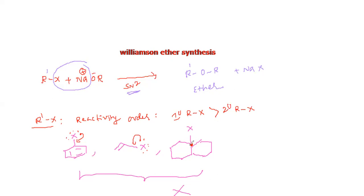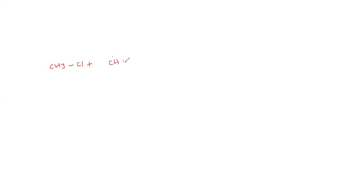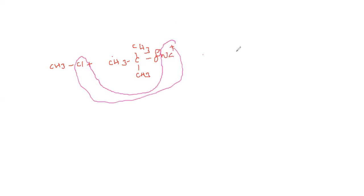Here, bridged head carbons do not involve in the reaction. Here is one more example: for a question like CH3Cl reacting with CH3O⁻Na⁺ (a sodium salt), the loss of NaCl gives CH3OCH3 plus NaCl.